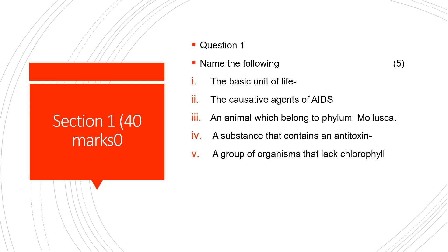Under Section 1, the first question is 'Name the Following.' There are 5 questions: What is the basic unit of life? What are the causative agents of AIDS? Name an animal which belongs to phylum Mollusca. Name a substance that contains an antitoxin. Name a group of organisms that lack chlorophyll.